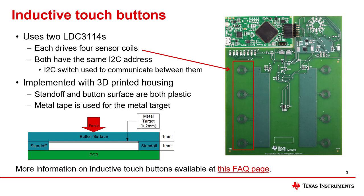When force is applied to the button surface, the metal target bends towards the sensor coil and is detected as a force response or button press depending on the operational mode of the MCU of this design. For more general information on inductive touch buttons, please visit our E2E FAQ page linked on this slide.